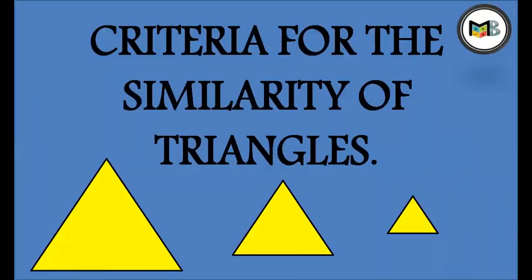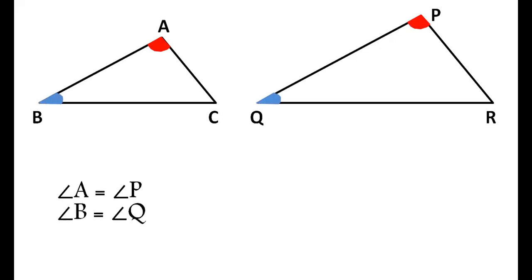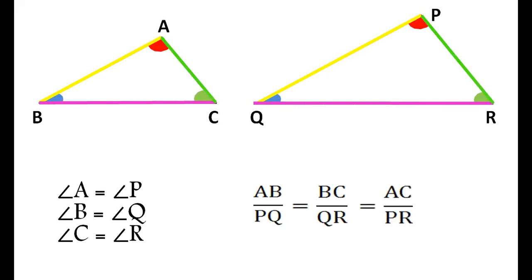Here we have two triangles, triangle ABC and triangle PQR. In them, angle A is equal to angle P, angle B is equal to angle Q, and angle C is equal to angle R. And AB by PQ is equal to BC by QR equal to AC by PR. These are the ratios of corresponding sides which are equal.